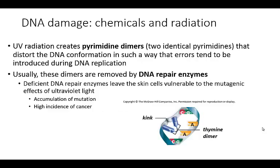UV radiation itself can also cause mutations. It causes pyrimidine dimers — nearby thymines will bind each other instead of binding their adenines across from one another. Usually these types of mistakes are removed by DNA repair enzymes. However, if you are deficient in these DNA repair enzymes for a number of reasons, it can leave your cells vulnerable to different mutagenic effects.